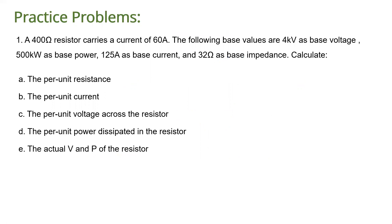For problem number one: a 400-ohm resistor carries a current of 60 amperes. The following base values are given — 4 kilovolts as base voltage, 500 kilowatts as base power, 125 amperes as base current, and 32 ohms as base impedance. Calculate: (a) the per unit resistance, (b) the per unit current, (c) the per unit voltage across the resistor, (d) the per unit power dissipated in the resistor, and (e) the actual voltage and power of the resistor.